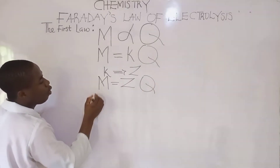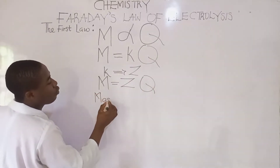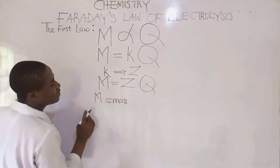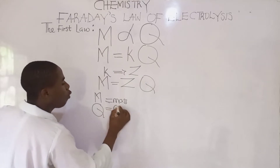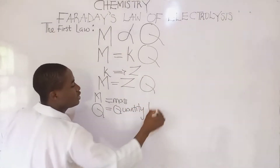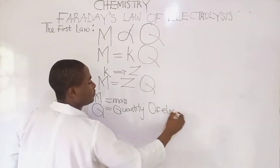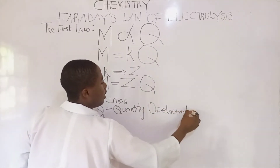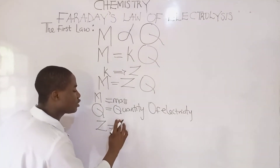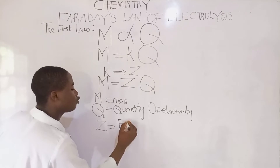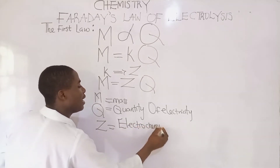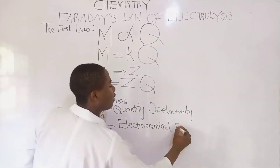Recall: M is mass, and Q is quantity of electricity. And what is Z? Z is called electrochemical equivalent.